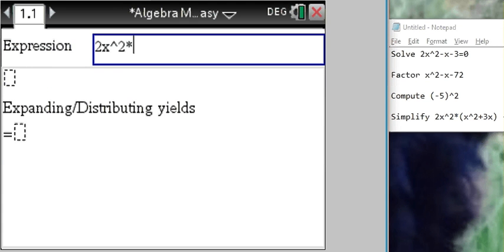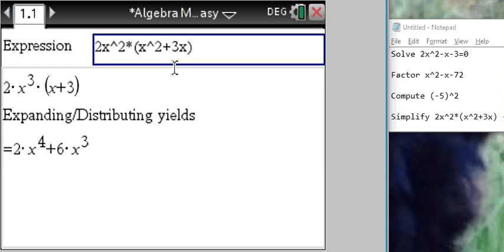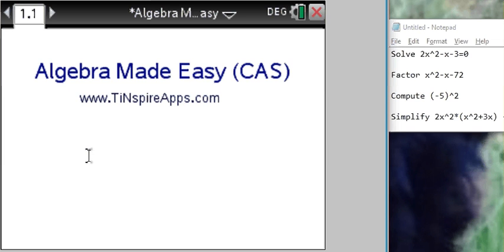2x² times x² plus 3x. If you want to expand this expression without having any factors left, this is what we get after expanding. Thanks for watching, this is Algebra Made Easy, solves all algebra problems step by step. Only runs on handheld calculators. Thanks for watching, bye bye.